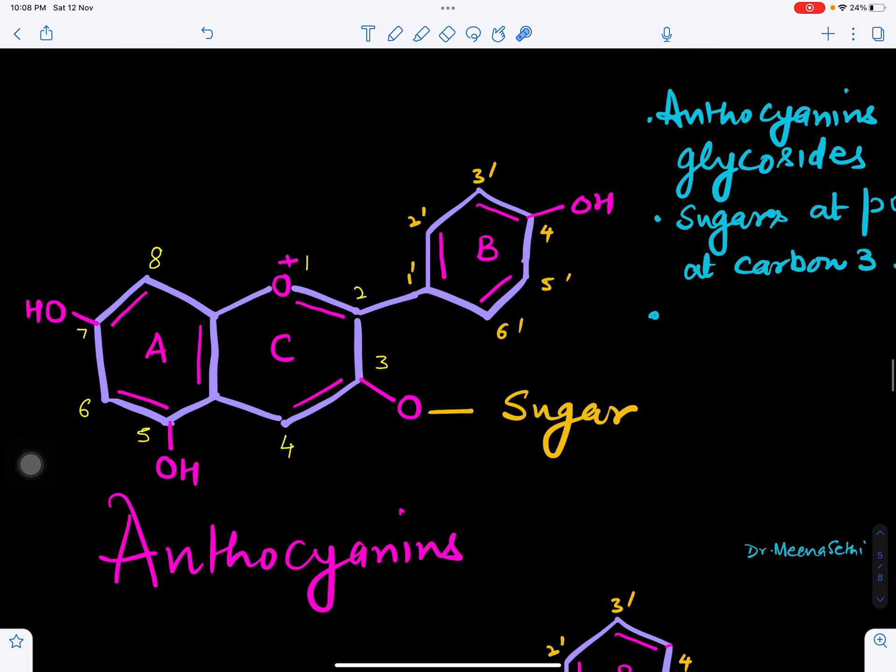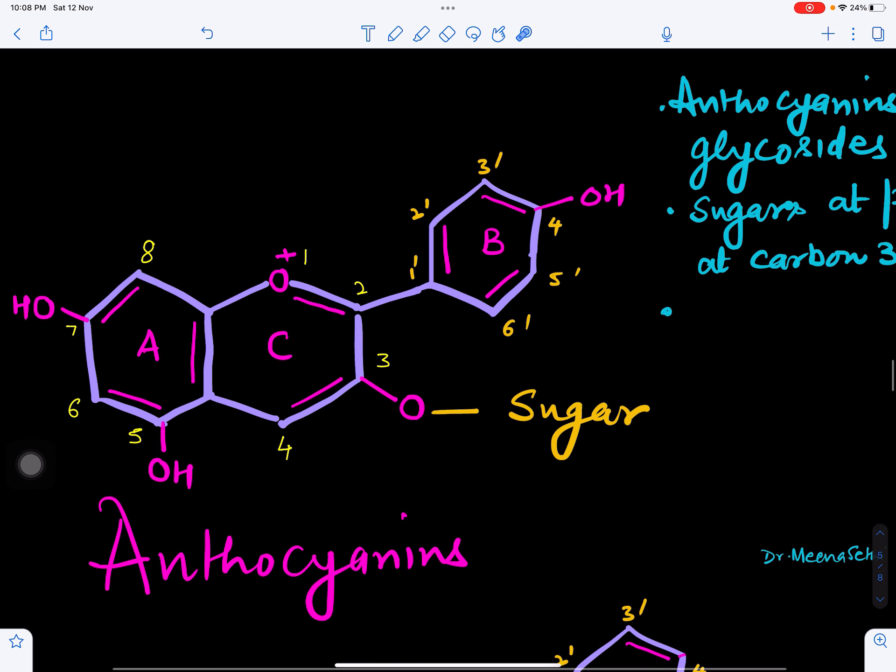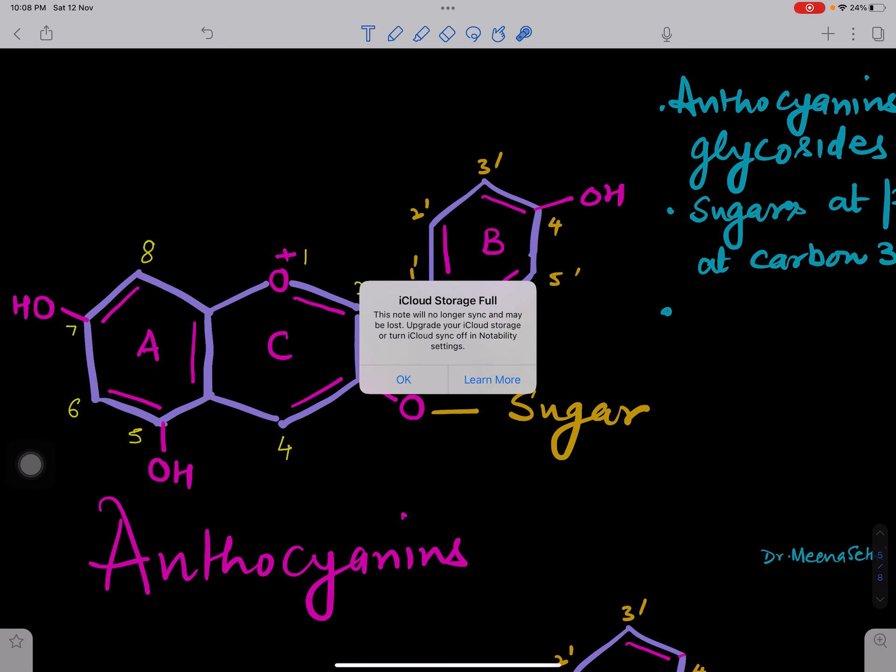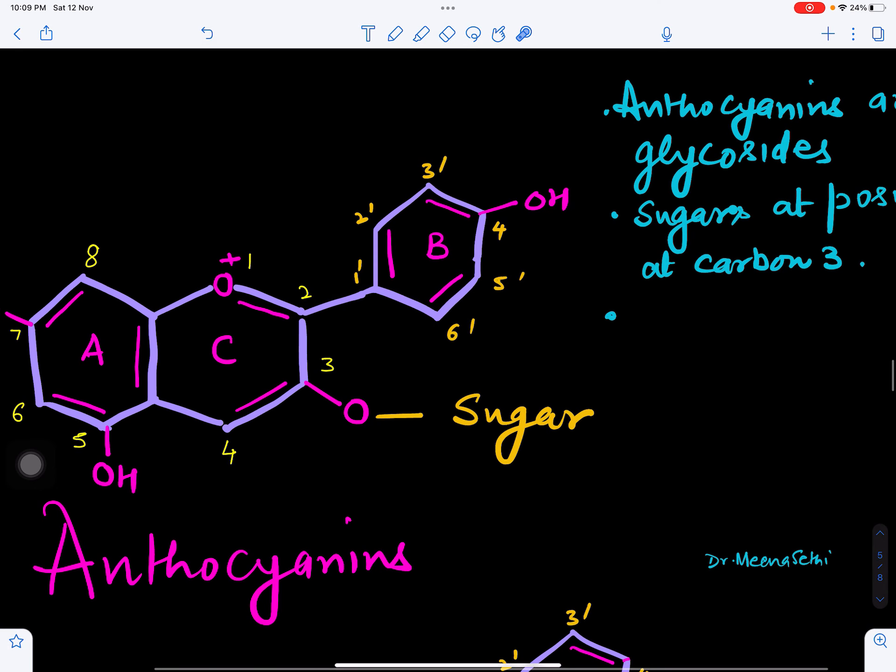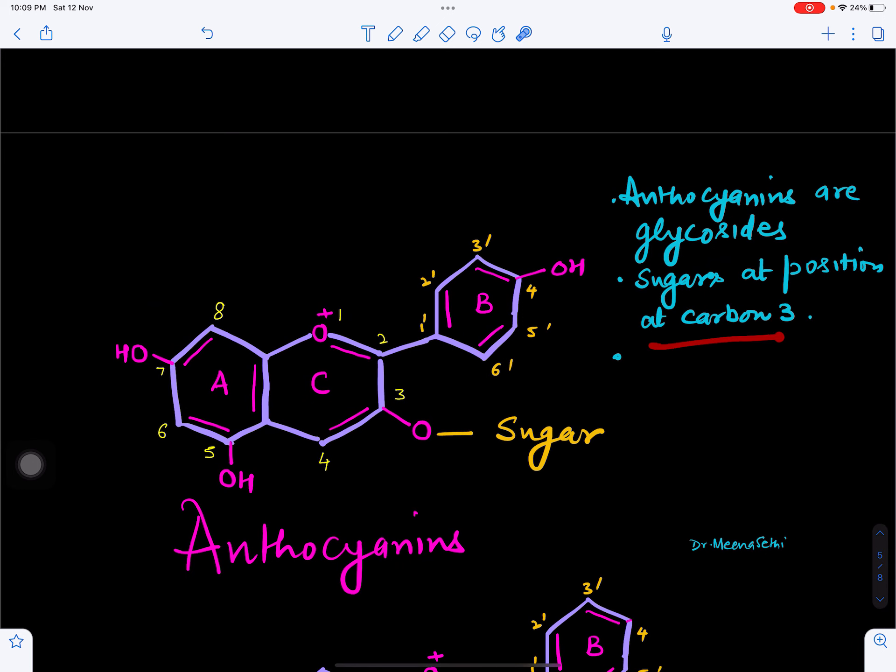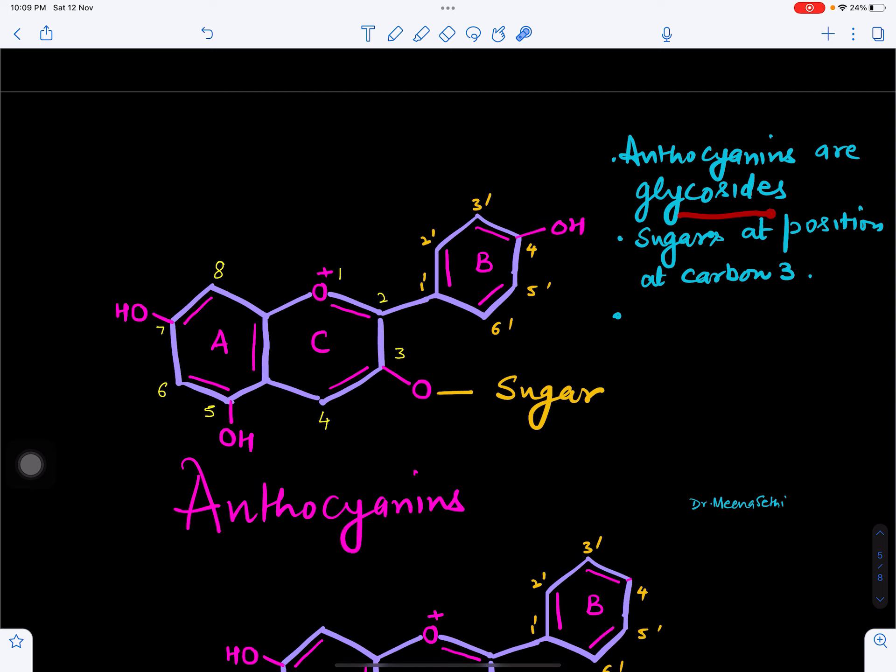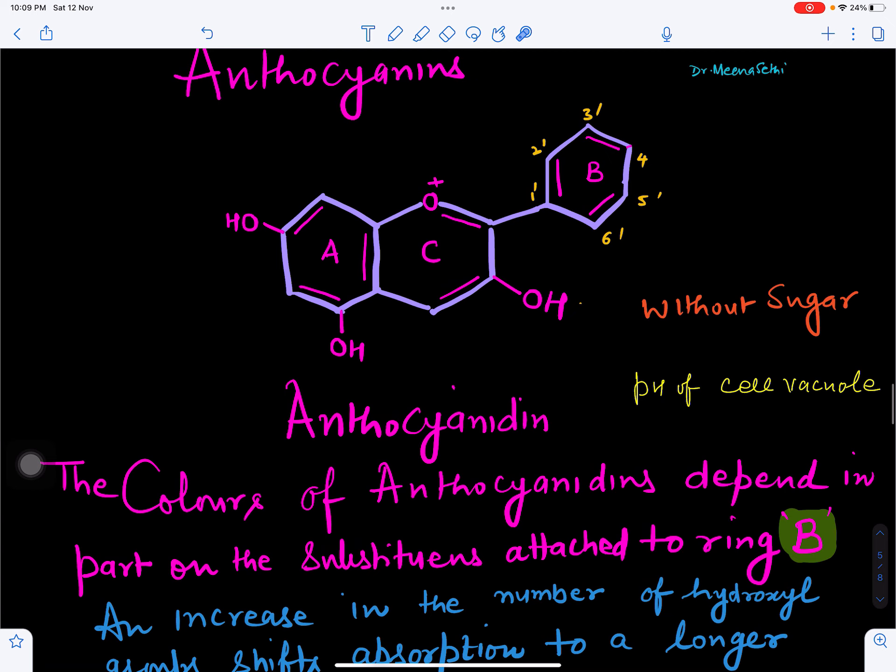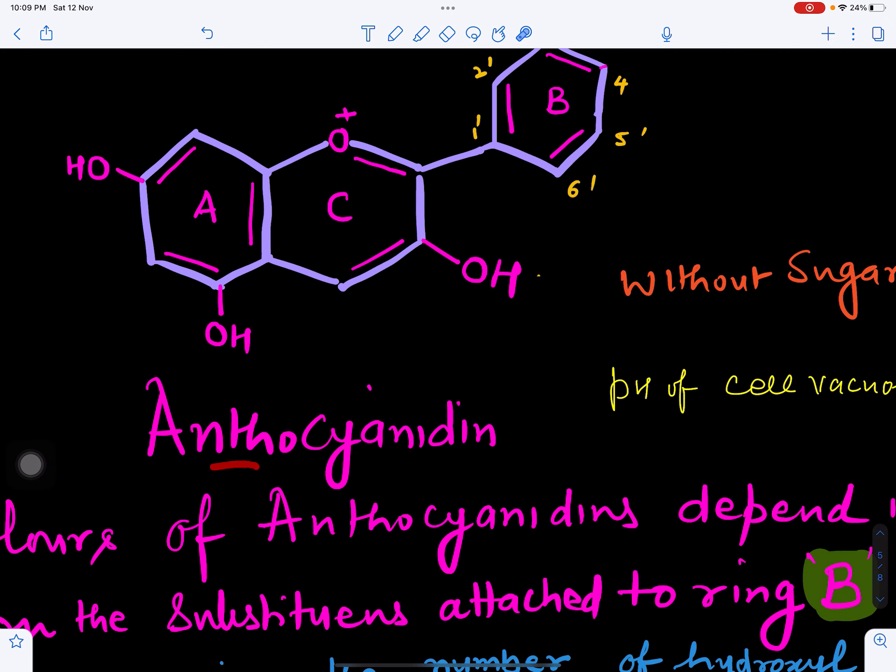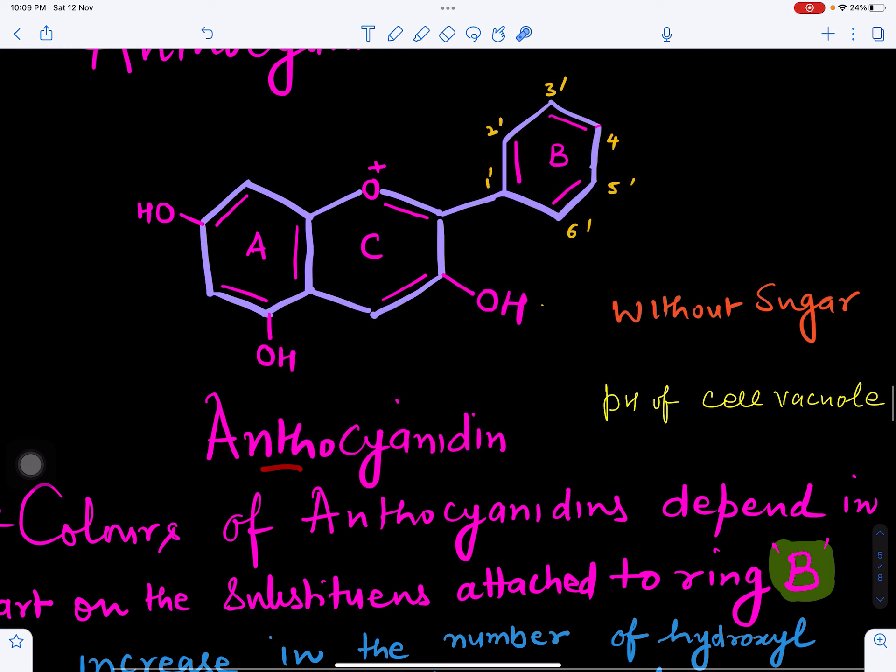Now if we see the structure of anthocyanins, they are having aromatic rings. There are three rings: A, B, and C. Anthocyanins also have sugar at position three. You can see here this is the sugar attached at carbon number three. So anthocyanins are glycosylated, meaning they are sugary in nature, they are glycosides. But sometimes they may not have sugars, then it is called anthocyanidin, meaning this is without sugar.